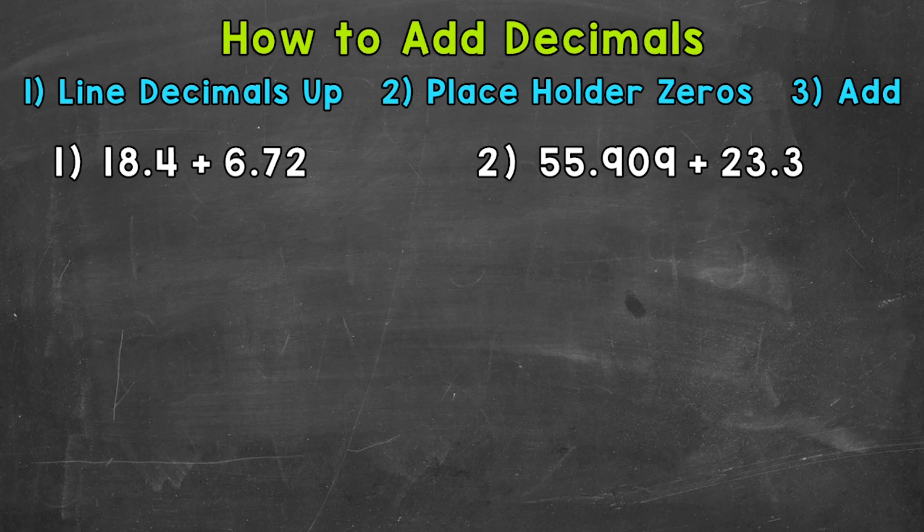Let's jump into our examples and start with number 1, where we have 18 and 4 tenths plus 6 and 72 hundredths. So when we set these problems up, we want to make sure that we line our decimals up. That's going to line up all of our places.